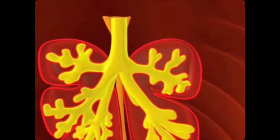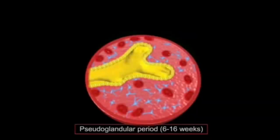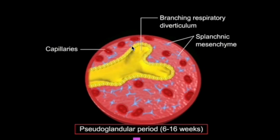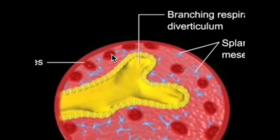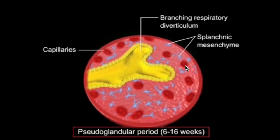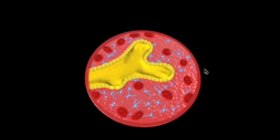The endoderm gives rise to the very important pulmonary epithelium. Development of the respiratory passages is divided into four periods. First is the pseudoglandular period, which is non-functional from weeks 5 to 17 (some sources say weeks 6 to 16). In this stage, the bronchioles look like glands but are lined by cuboidal epithelium. The capillaries are very far from the bronchioles, so no gas exchange actually happens here.